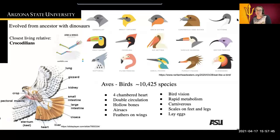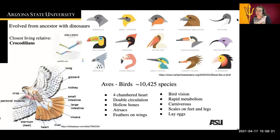Finally, we'll talk about the order Aves, which evolved from an ancestor in common with dinosaurs — in fact, a bird's closest living relative is the crocodile. There are about 10,400 species of bird. They have four-chambered hearts, just like mammals, and double circulation. They have hollow bones, which help them fly, and air sacs that keep them more buoyant. They have feathers on their wings, unlike bats, and bird vision that lets them see very small things from far away. They have a very rapid metabolism due to the energy demands of flight, and they're carnivorous. They have scales on their feet and legs, and they lay eggs.